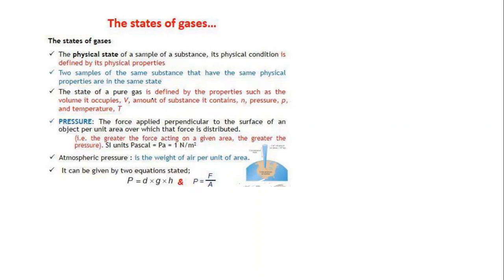The state of a pure gas is defined by properties such as the volume it occupies, the amount of substance it contains, the pressure, and the temperature. For the amount of substance we can talk about number of moles n, or even concentration. Pressure and temperature also go hand in hand for gases.